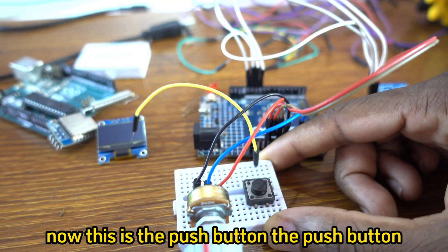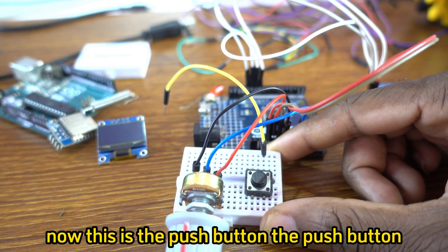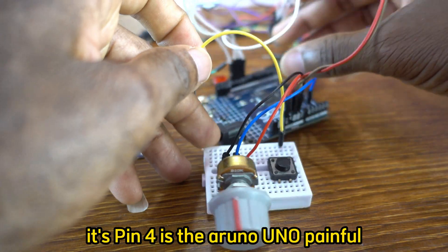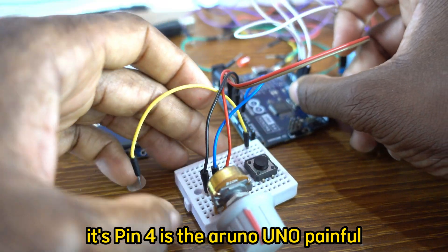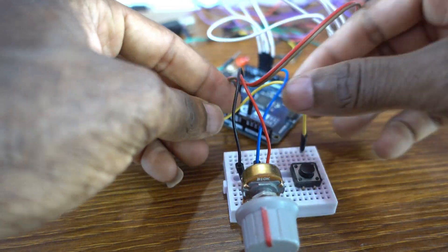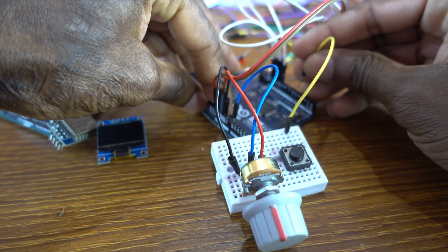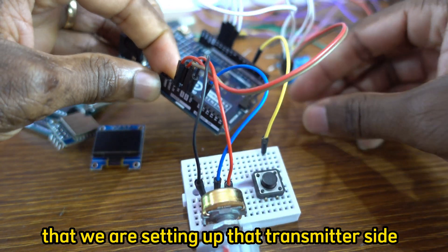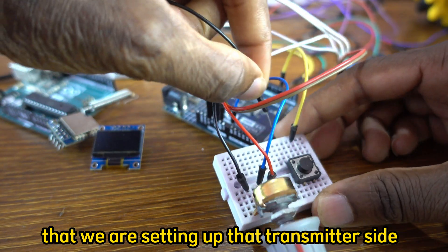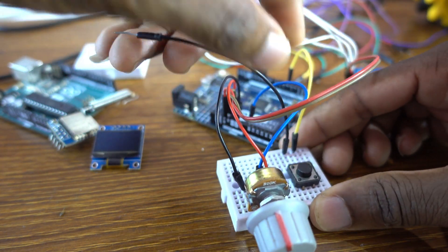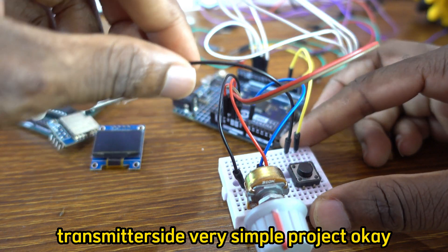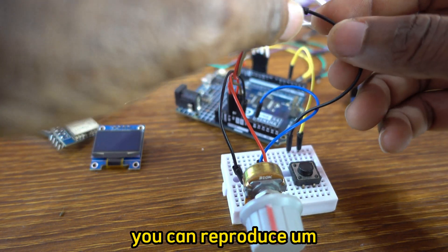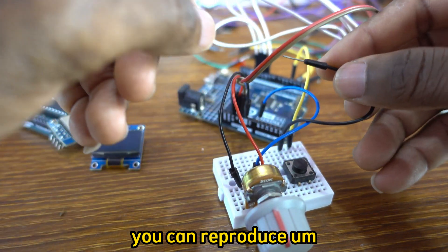Now this is the push button, our push button. It's pin 4, pin 4 is the Arduino Uno pin 4. That's - we are setting up the transmitter side guys. Transmitter side, very simple project. You can reproduce at home.